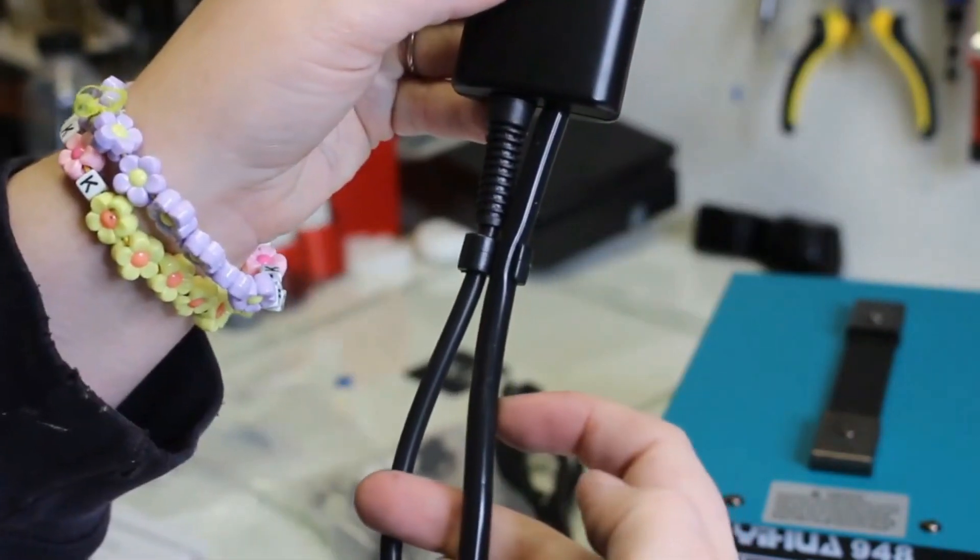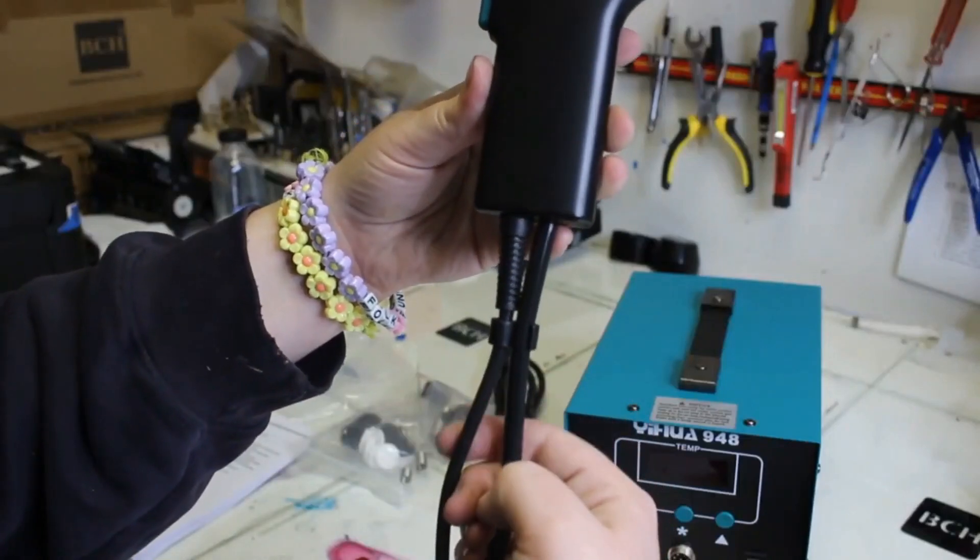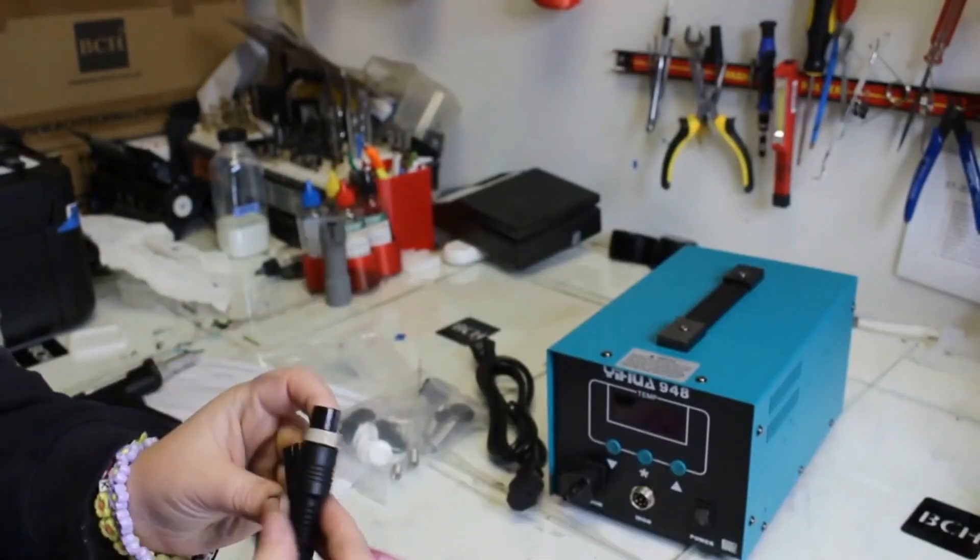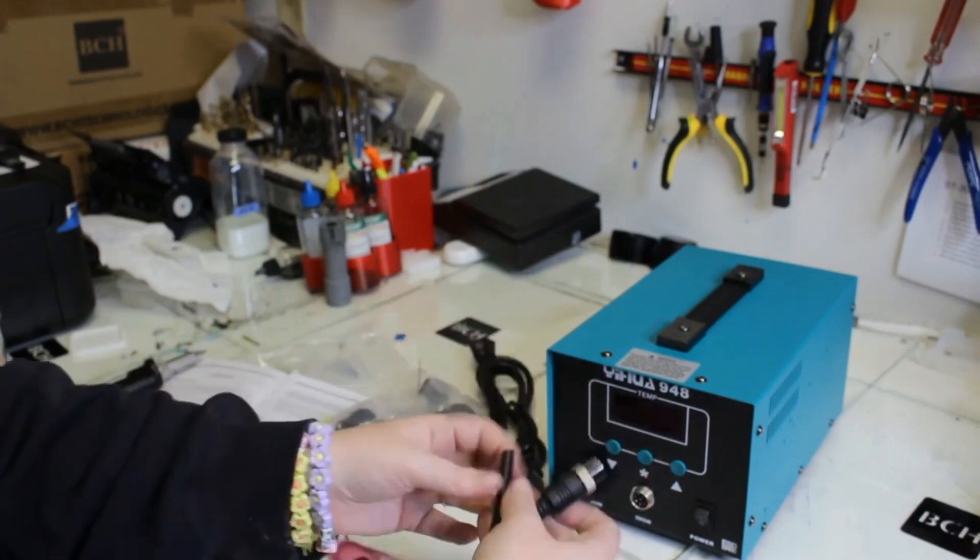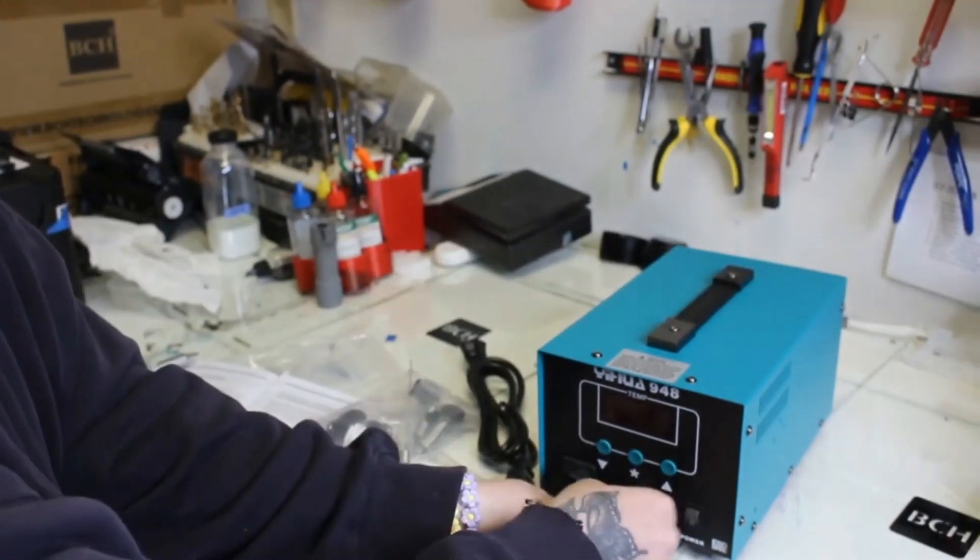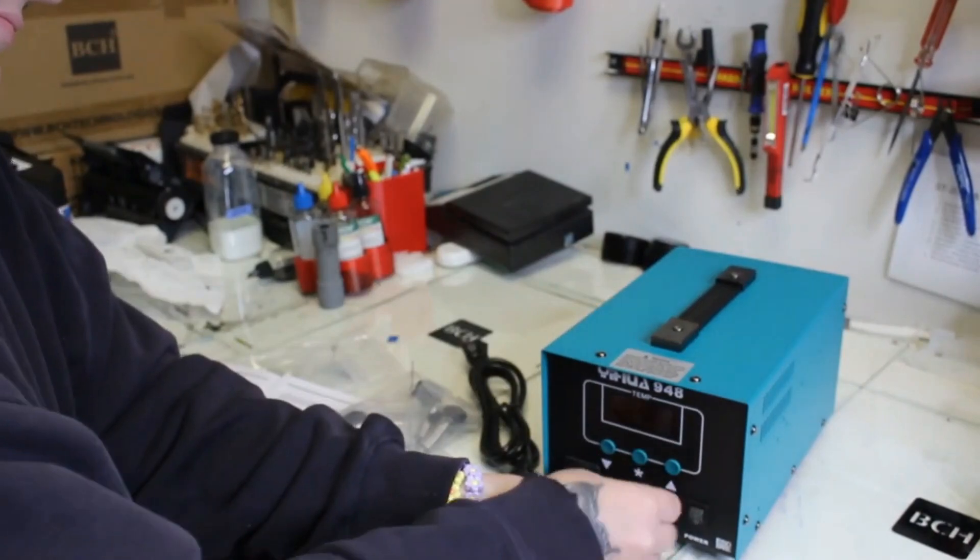So there's these two tubes on there. One is to the actual gun. Well, they're both to the actual gun, but one is for that vacuum and then one is to plug that desolder gun in there.